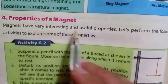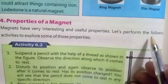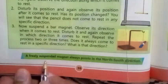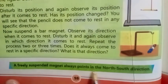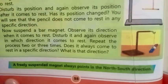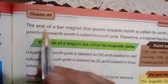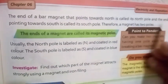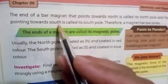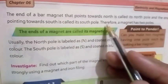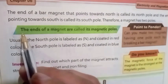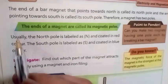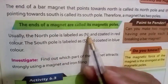Number four: Properties of a Magnet. Magnets have very interesting and useful properties. Let us perform the following activities to explore some of those properties. A freely suspended magnet always points in the north-south direction. The end of a bar magnet that points toward north is called its north pole, and the end pointing towards south is called its south pole. Therefore, a magnet has two poles. The ends of a magnet are called its magnetic poles.